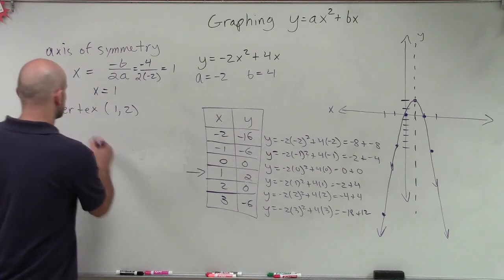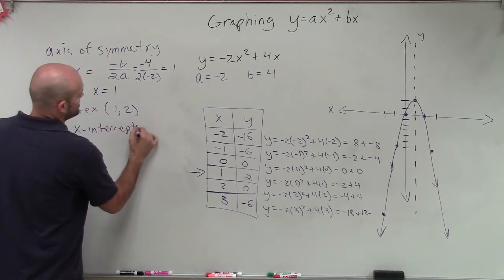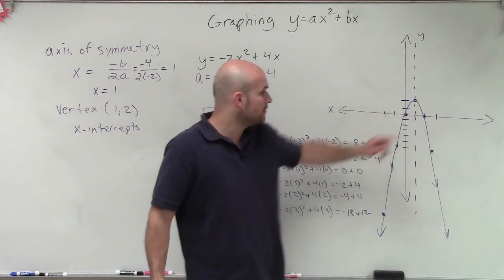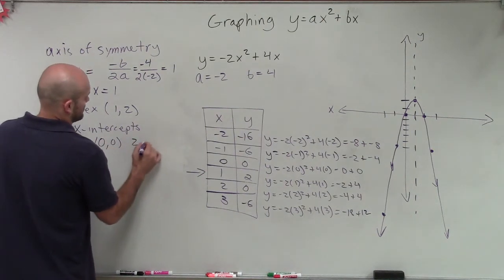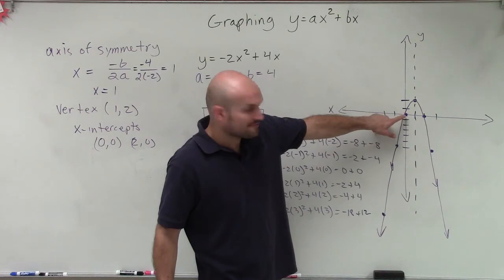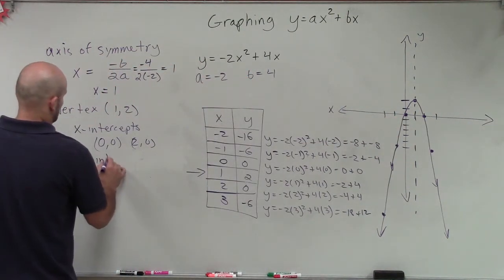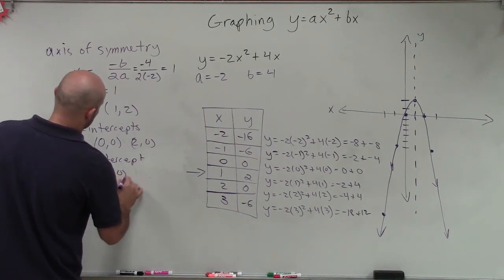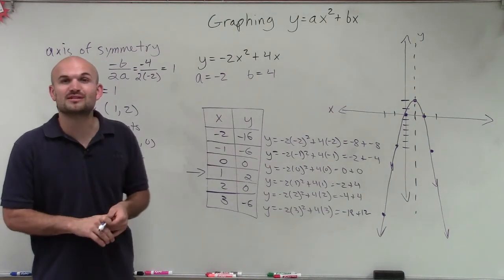The x-intercepts, where the graph crosses the x-axis, are at (0, 0) and (2, 0). The y-intercept, where the graph crosses the y-axis, is at (0, 0). That is how you graph an equation in the form of ax squared plus bx.